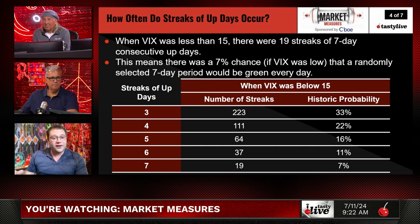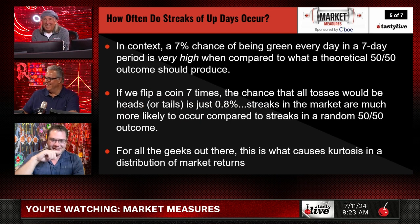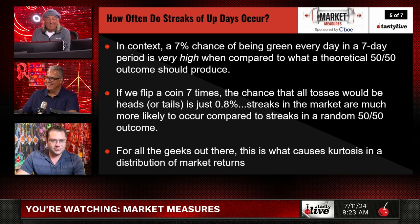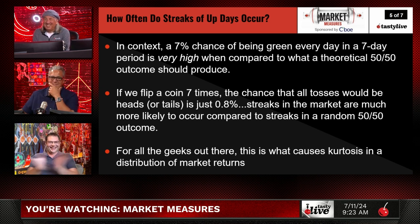The question is: how high is that compared to a theoretical 50-50 distribution? If the market were truly 50-50, the actual probability would be lower — but how much lower? A 7% chance of being green every day in a seven-day period is very high compared to the theoretical 50-50 outcome. Because if you flip seven times at 50-50, you go 50, 25, 12, 6, then down to about 0.8%. Streaks are much more likely to occur. For all the geeks out there, this is what causes kurtosis in the distribution of market returns. The actual probability is about 10 times higher than it would be in a random 50-50 up-or-down model — 0.8% versus 7%.